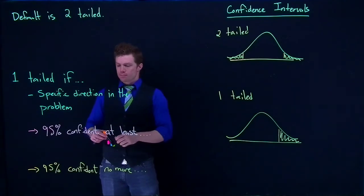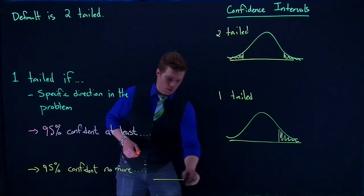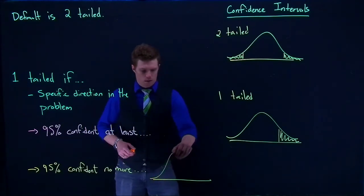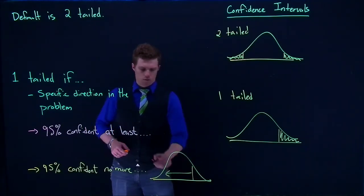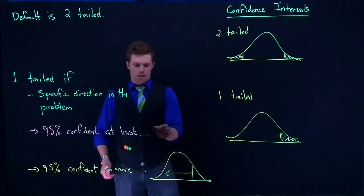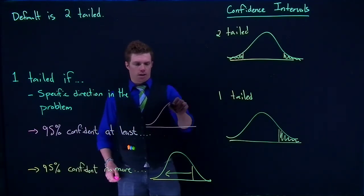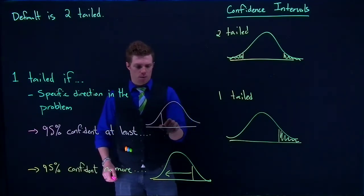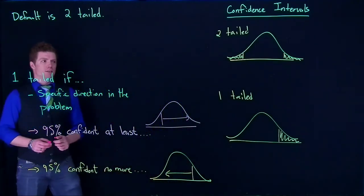But the default is two-tailed. If we get this no more than, we're looking for some upper value and everything below. And if we get this 95% confident at least, we're doing a one-tailed from the other direction, kind of like this, where there's a minimum value and we're saying that it's at least some value.